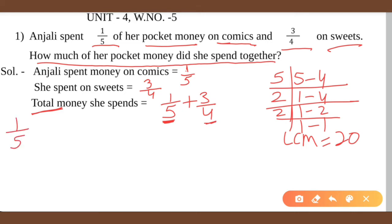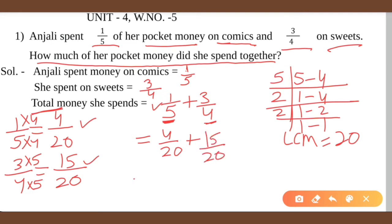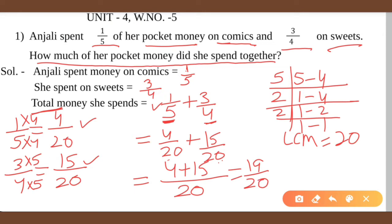We change the sum using simplification. 1 by 5 becomes 4 upon 20, and 3 by 4 becomes 15 upon 20. Now these two fractions are like fractions because the denominator is the same — 20. So 4 plus 15 gives us 19 by 20. This much fraction of her money she spent in all.